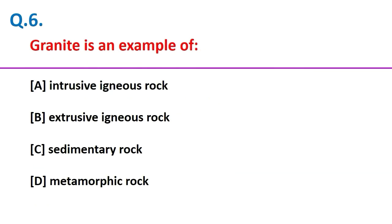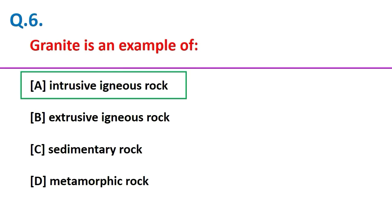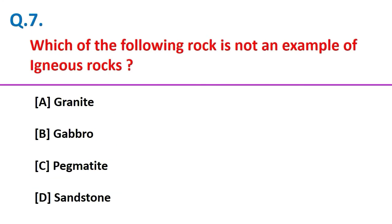Granite is an example of intrusive igneous rock. Sandstone is an example of sedimentary rock. Which of the following rock is not an example of igneous rock? Sandstone is an example of sedimentary rock, but granite, gabbro, and pegmatite are examples of igneous rock.